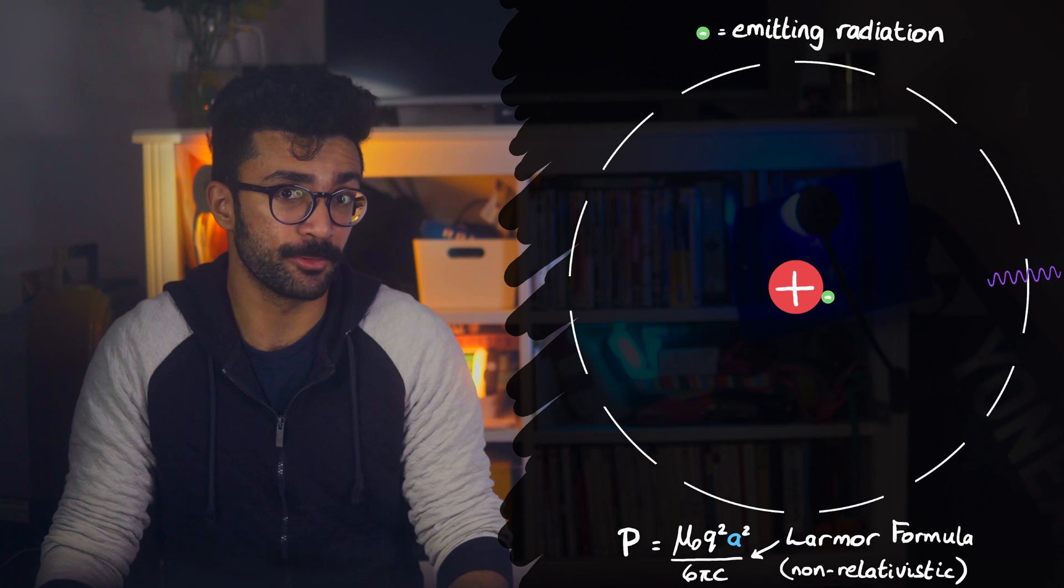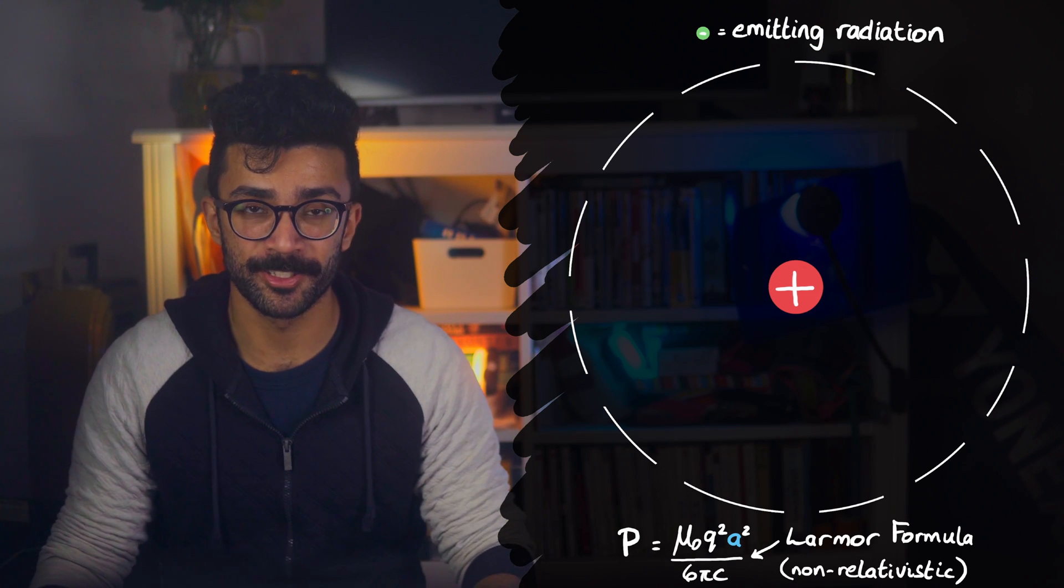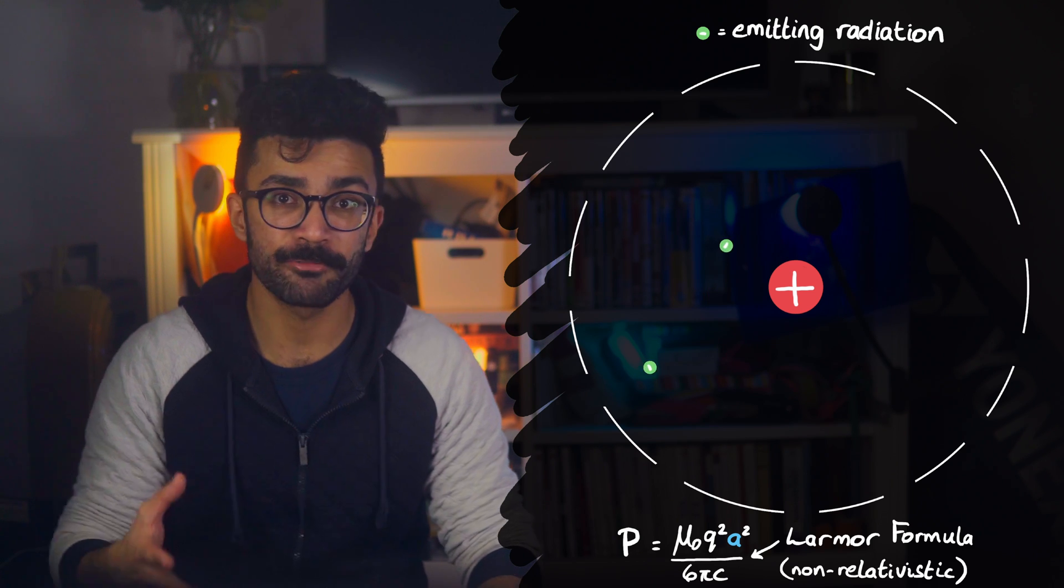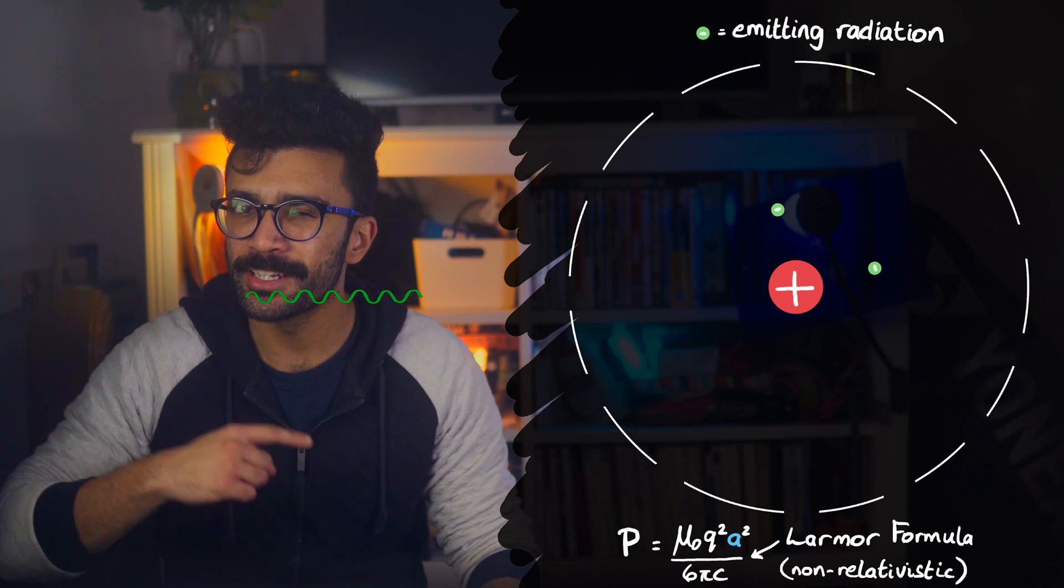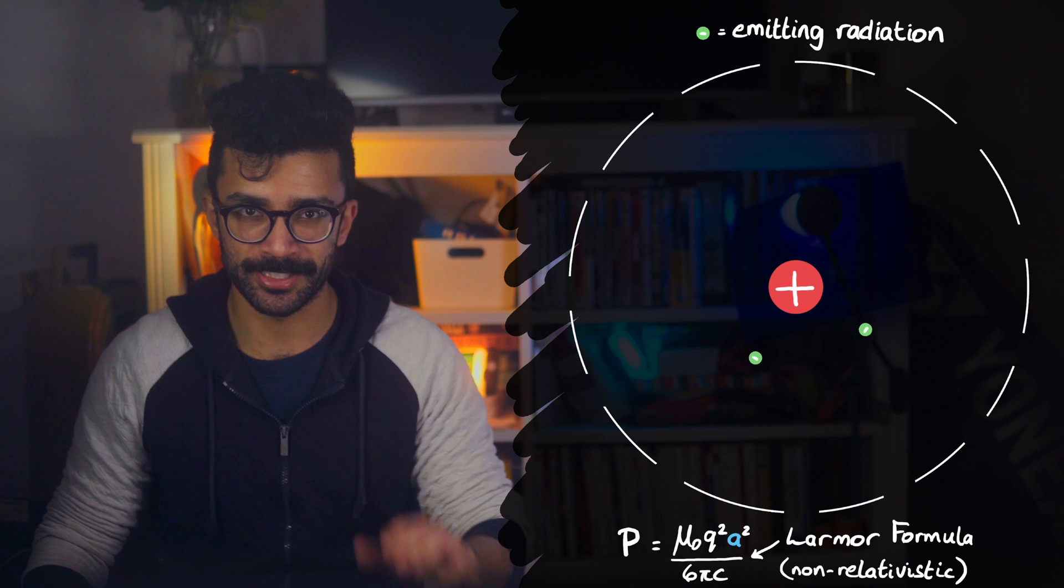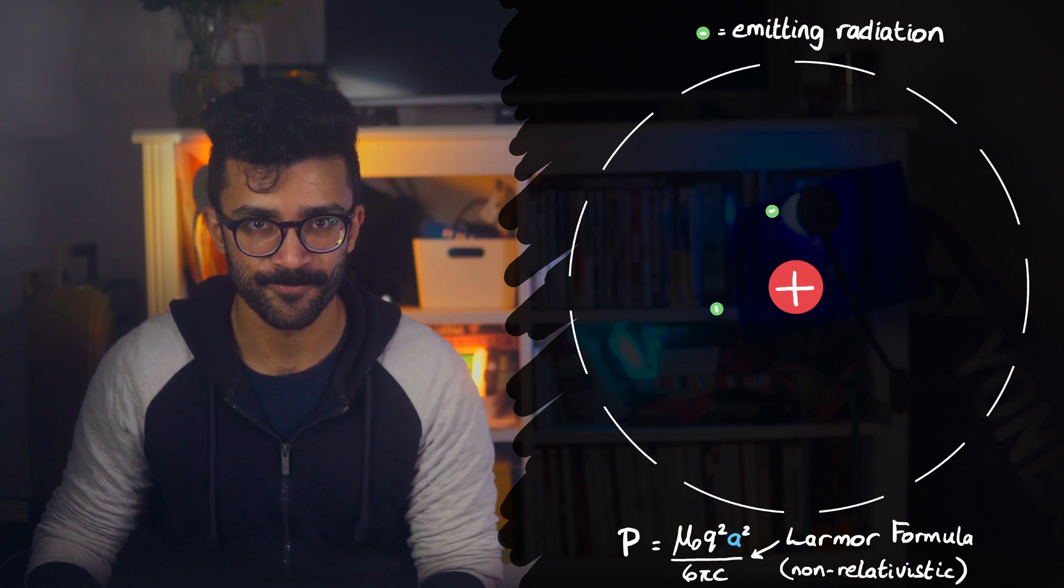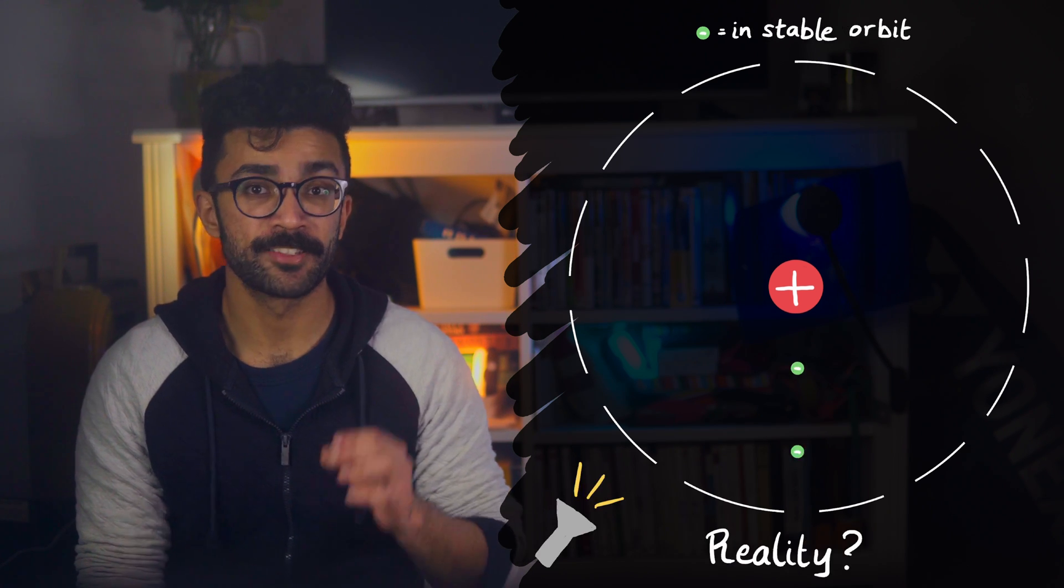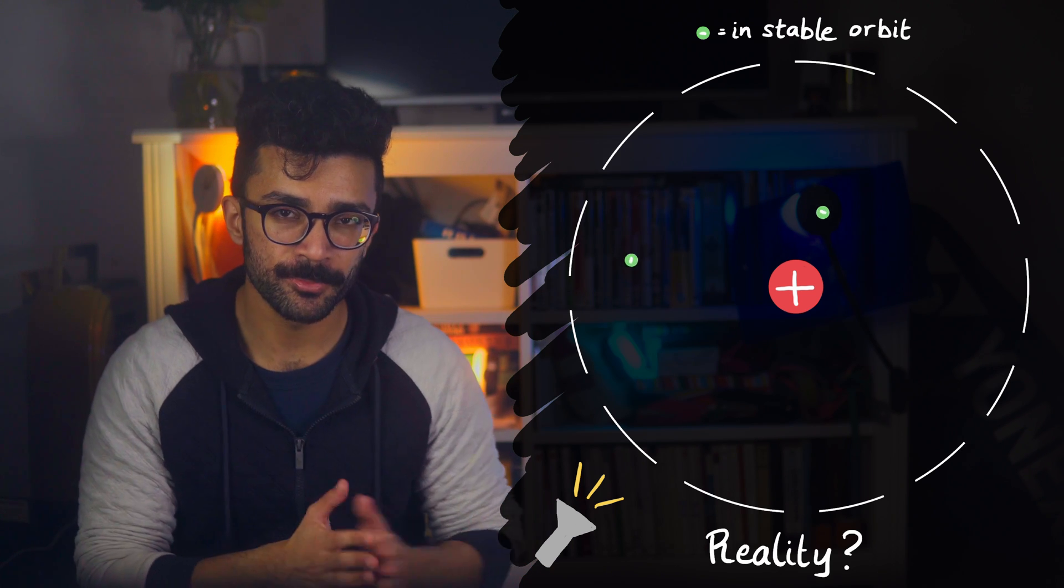In reality though, we saw that atoms were indeed stable. Electrons did not spiral into the nucleus, and atoms did emit radiation sometimes, but not the continuously changing radiation that the planetary model predicted.